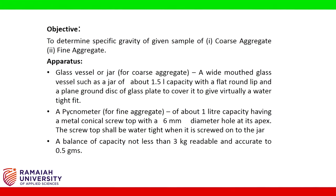The samples are: one, coarse aggregate; two, fine aggregate. Apparatus: a glass vessel or jar for coarse aggregate — a wide-mouthed glass vessel of about 1.5 litre capacity with a flat round lip and a plain ground glass disc plate to give a watertight fit. A pycnometer for fine aggregate of about one litre capacity, having a metal conical screw top with a 6 mm diameter hole at its apex, which shall be watertight when screwed onto the jar. A balance of capacity not less than 3 kg, readable and accurate to 0.5 grams.